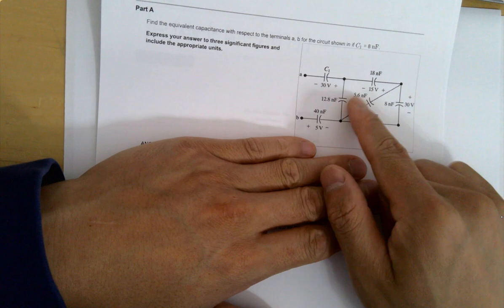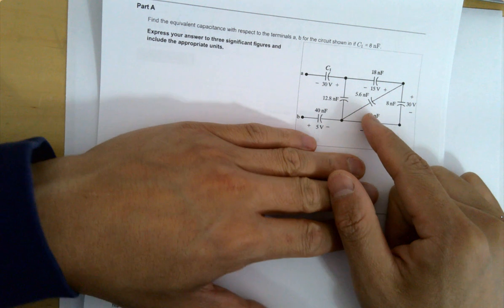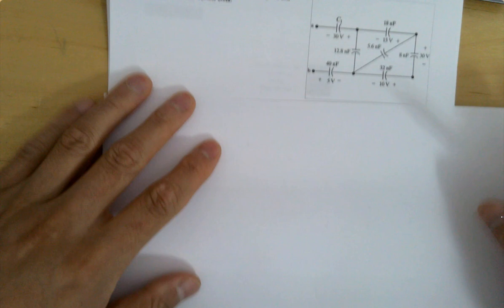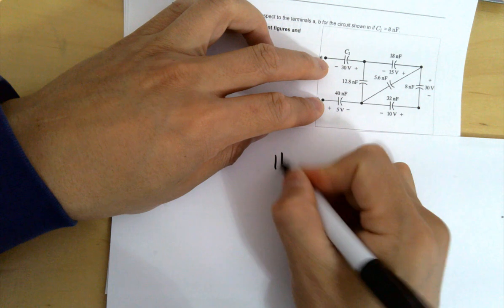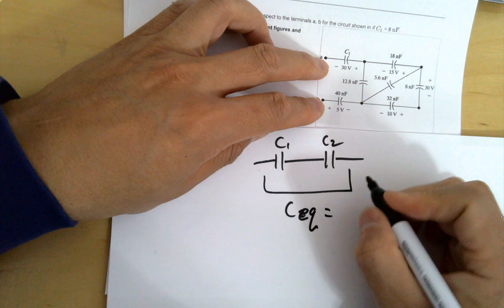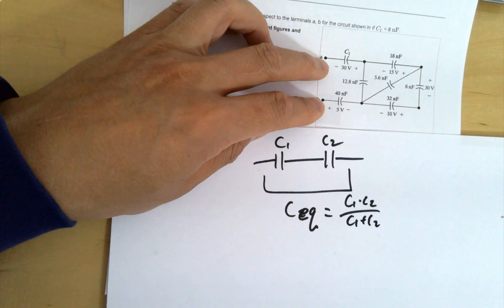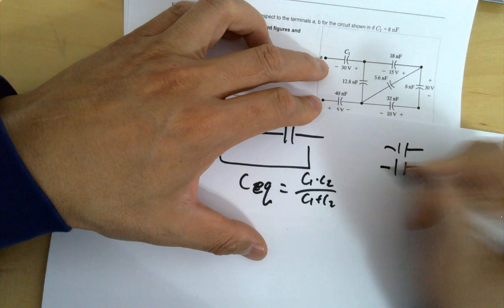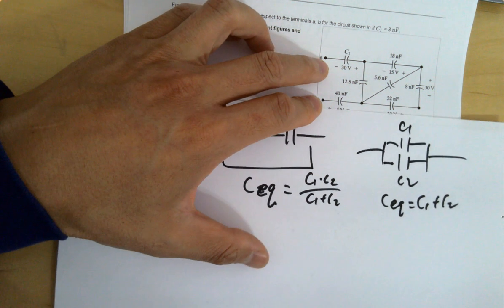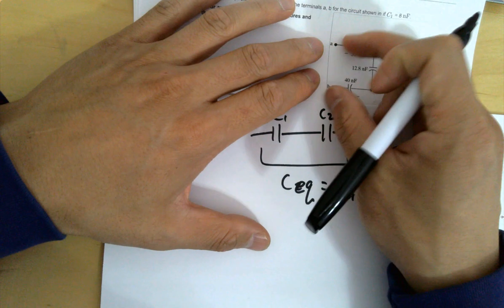For capacitors in series and parallel, the formulas are swapped compared to inductors. Capacitors in series: C_eq = (C₁ × C₂) / (C₁ + C₂). Capacitors in parallel: C_eq = C₁ + C₂. Keep voltage relationships in mind when working through these capacitor network problems.